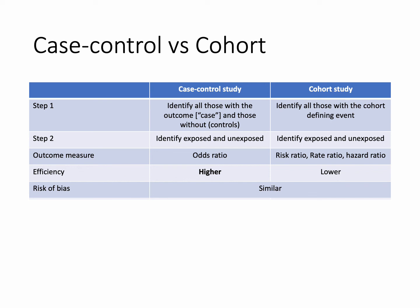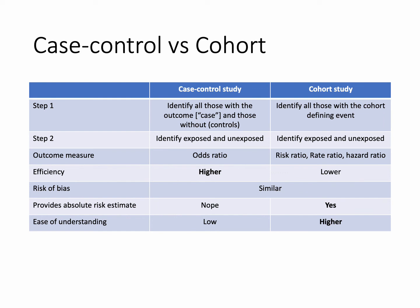Case control studies are considered more efficient because statistical power is driven by the number of people with the outcome, and identifying all those who've had the outcome is your first step. The risk of bias is similar between the two. A case control study does not give you the absolute risk of an event — only the relative risk — whereas a cohort study gives you the absolute risk. I personally prefer cohort studies because they're easier to explain and understand.